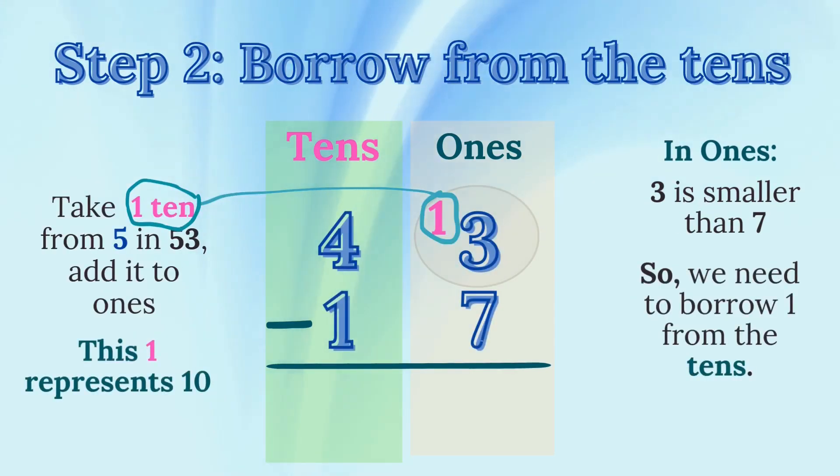Step 2. Borrow from the tens. The tens digit in 53 is 5. We take one 10 from it, leaving four tens, and add 10 ones to the ones place. Now, the ones place becomes 13 instead of 3.